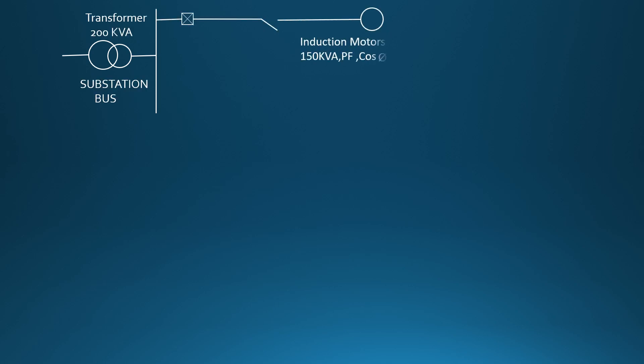Due to compensation of leading KVAR by the capacitor to the lagging KVAR of the inductive load — here, induction motors — the overall power factor will be improved, and as a result, additional load may be drawn from a transformer, which is being explained here. Please watch.